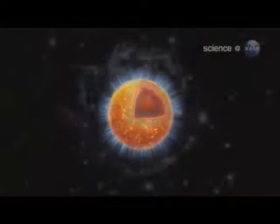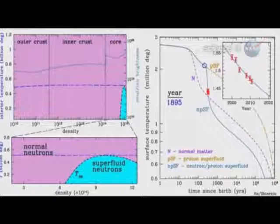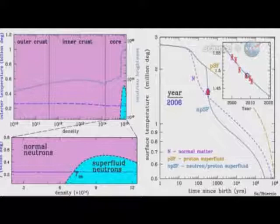The Cassiopeia A explosion occurred a relatively short time ago and the resulting neutron star is still cooling off. Looking at the change in temperature over the years, astronomers noticed that the star was losing heat at a dramatic rate. To explain such a rapid loss of heat, the core must be made up of a superfluid.